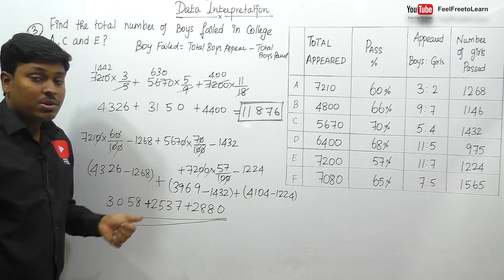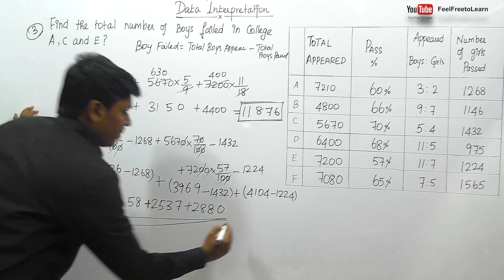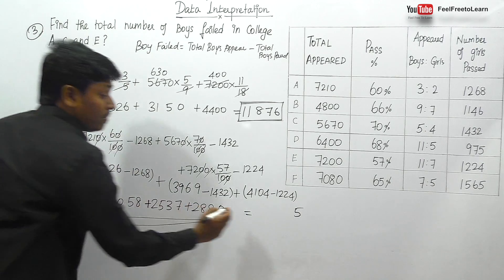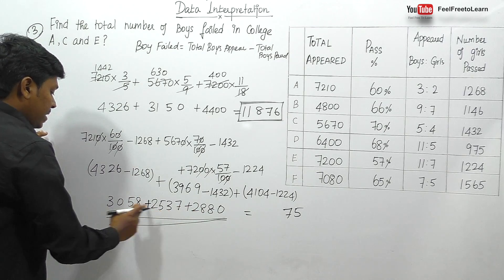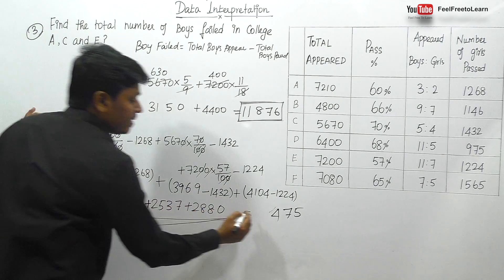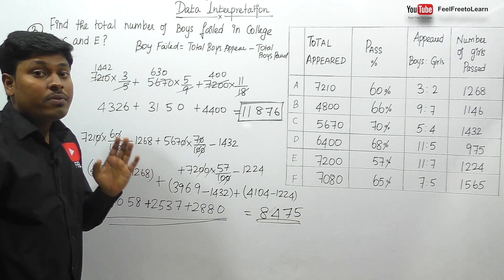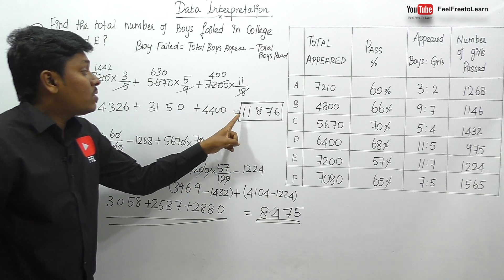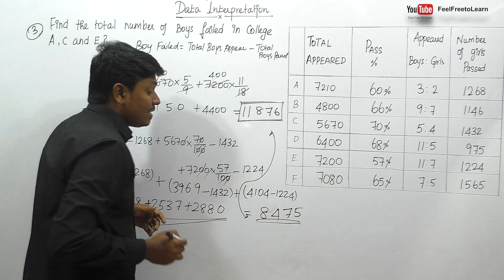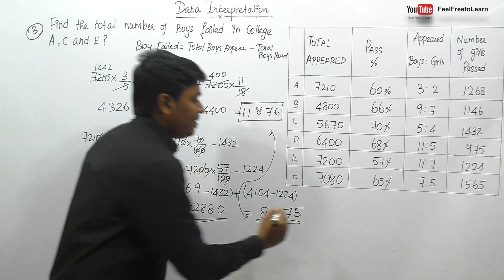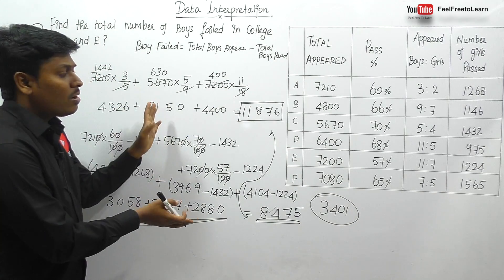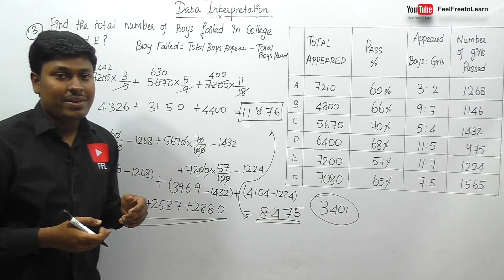Adding all boys passed: 3058 + 2537 + 2880 = 8475. Total boys appeared is 11876, total boys passed is 8475. Subtracting: 11876 minus 8475 = 3401. So the answer is 3401 — the total number of boys who failed in college A, college C, and college E together.